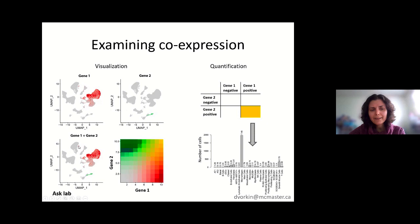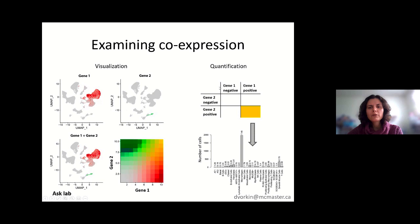We can't really see the co-expressing cells visually, but we have to remember we have 80,000 points in this plot, so we could still have some cells that aren't visible. That's where quantification comes in. We created a table counting cells showing different types of expression: cells with no expression of either gene, cells expressing only gene 1, cells expressing only gene 2, and cells expressing both. We did find some cells expressing both genes.